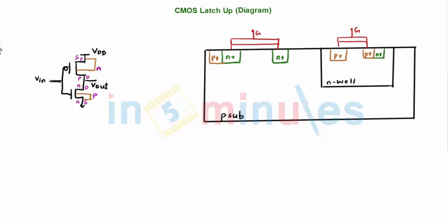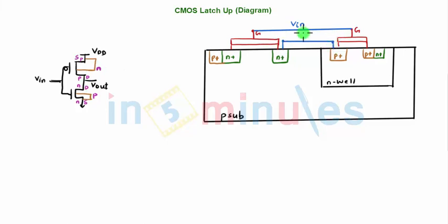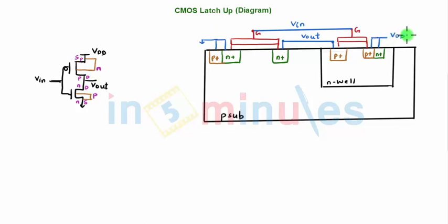Both gates are shorted through metallization, so this is my VIN. The drain of NMOS and the drain of PMOS also need to be shorted, and the output comes out at both drains. The source and substrate of NMOS is grounded, and the source and substrate for PMOS is connected towards VDD. So with that I have made all the connections.